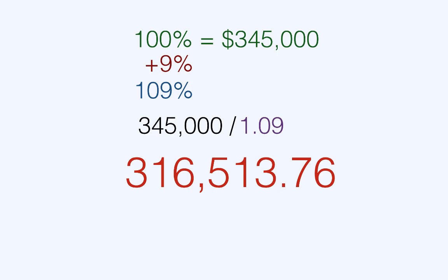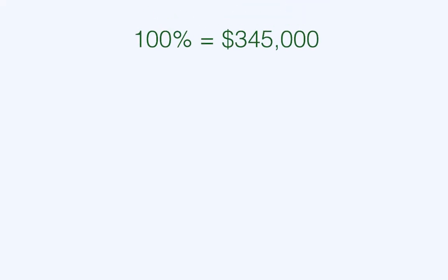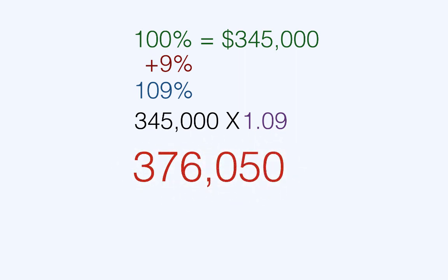Now let's look at this going the other direction. A house sold for $345,000, which was 9% less than the cost of the house. The original cost of the house was most nearly. We have a similar formula: 100% is $345,000. You add 9%, which is 109%. You convert that to a decimal, which is 1.09. But now the difference is, because we're looking for a larger number, you take $345,000 and multiply it by 1.09, and you get $376,030.